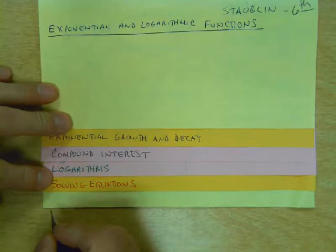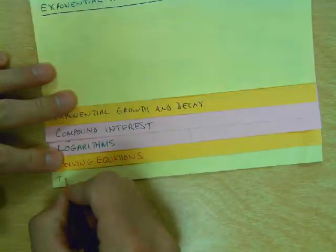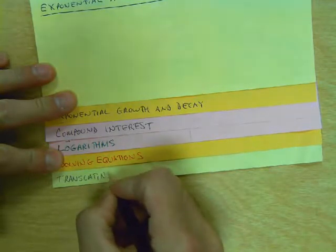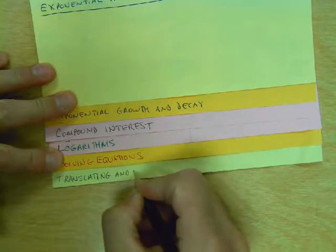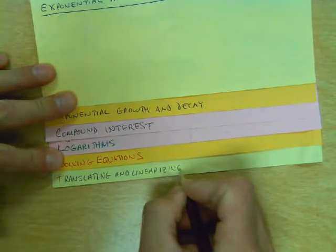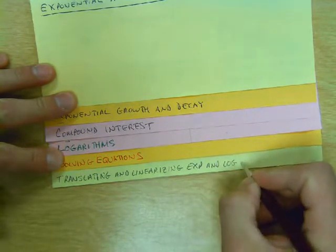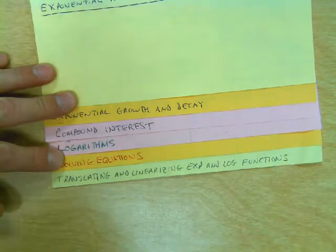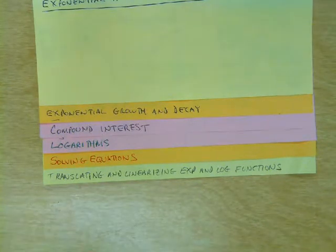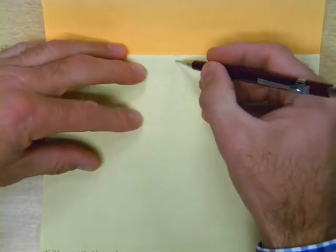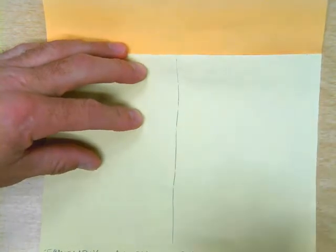This last tab is going to be called Translating and Linearizing Exponential and Log Functions, like that. So, once you have that, we'll open up the tab, and what we're going to do in the bottom tab, we're going to divide this in half, and we're going to leave that for tomorrow, and we are going to go up into the top half.